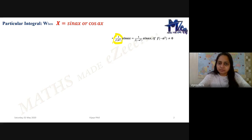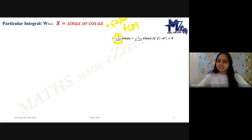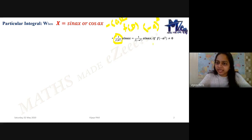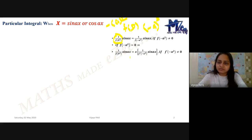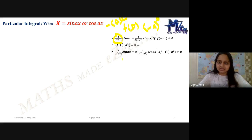In short, I have to replace from f(D), every D² as minus of a². Remember that it is minus of a². There is a difference between the positions in the bracket, so please see the position of the bracket and understand the formula. Now, this formula holds good if f(−a²) is not zero. If it is going to be zero, then the formula will be the same as what we discussed with e^(ax) kind of function.